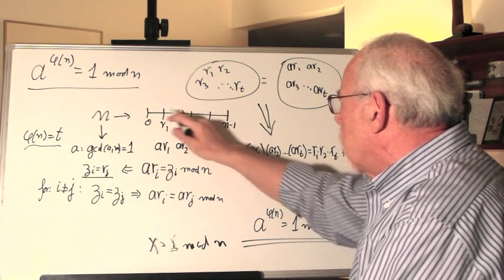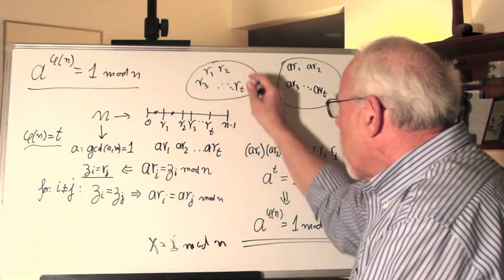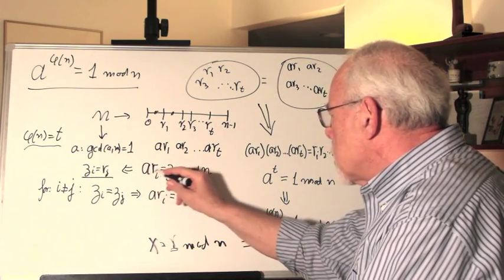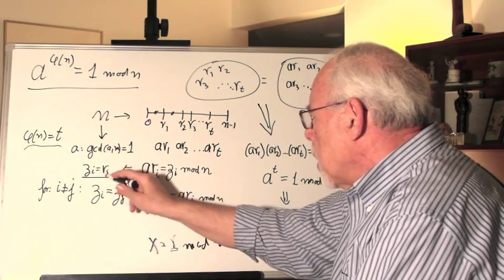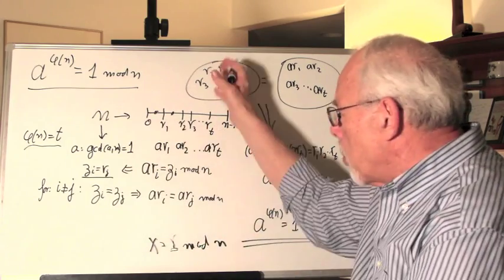Not here, not here, not here. Cannot be one of these numbers. It has to be a member of this set. So the conclusion is that zi is some rj. We don't know which one, but a member of this set.